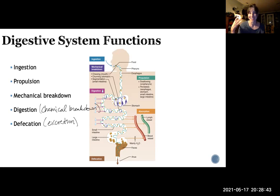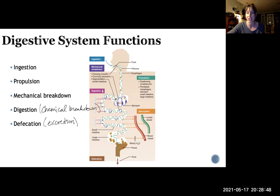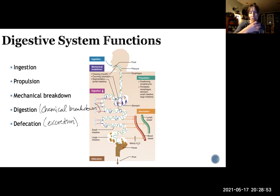Your urinary system gets rid of liquid wastes and your digestive system takes care of solid wastes. You excrete liquid for the urinary system and solid for the digestive system.